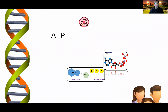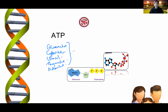ATP stands for adenosine triphosphate. We've mentioned before about nitrogenous bases in DNA — guanine, cytosine, uracil, thymine, and adenine. These are all the nitrogenous bases that occur in DNA. Adenosine is derived from adenine. We've got our pentose ribose sugar, which has five carbons, and then we've got our triphosphate group — and that in a nutshell is what ATP is.